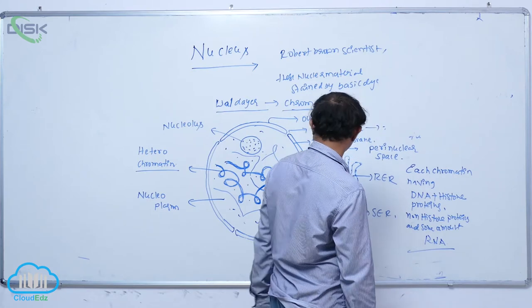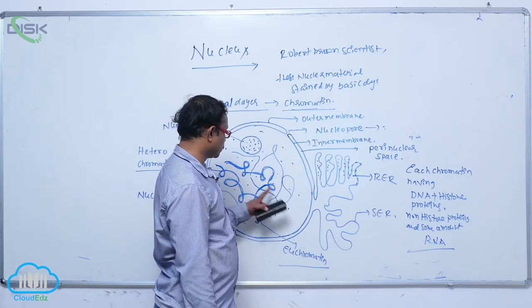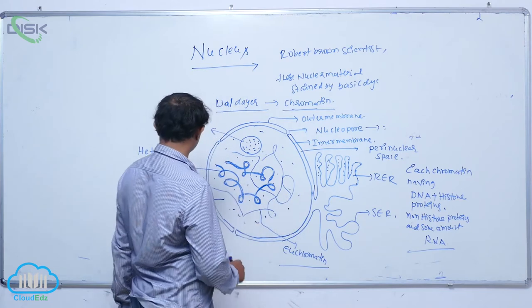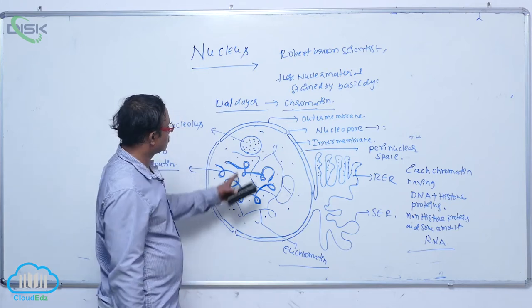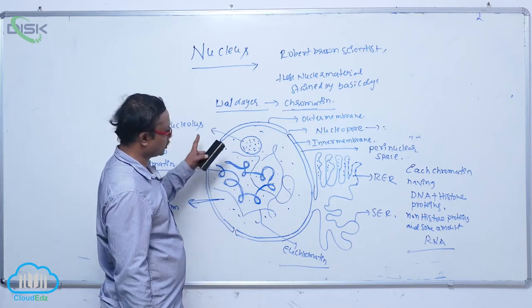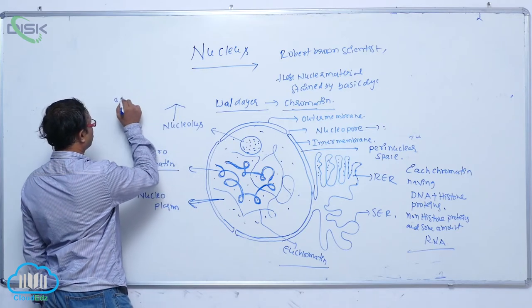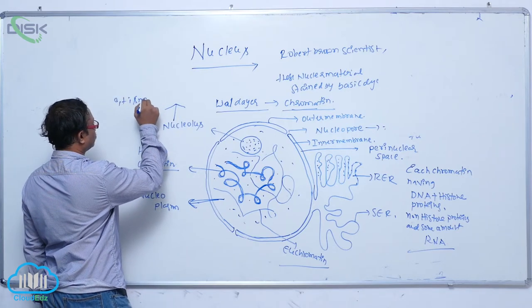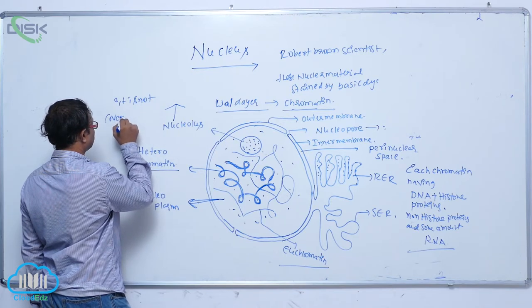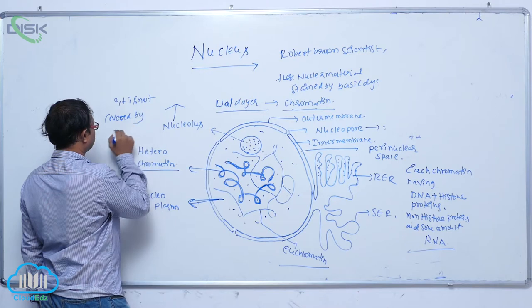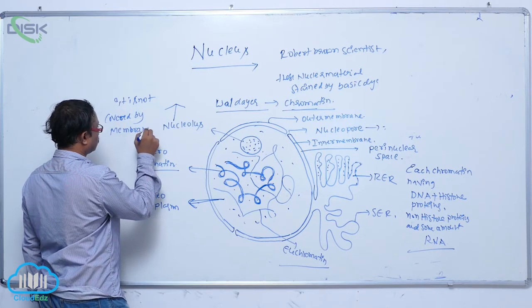Inside the nucleoplasm, chromatin is present. Also present is a small spherical-like structure known as the nucleolus. The nucleolus is not covered by any membrane.